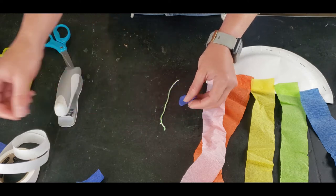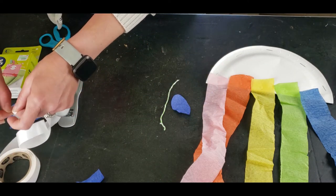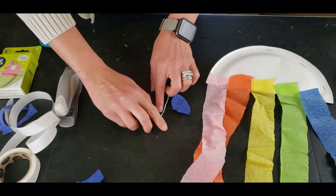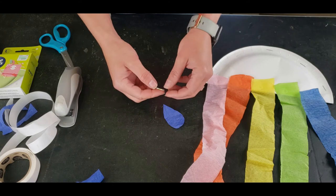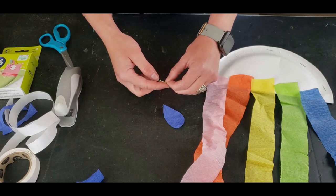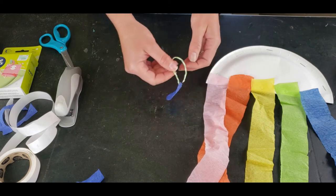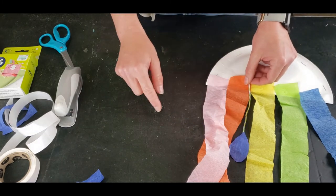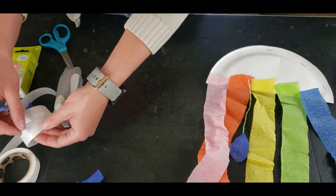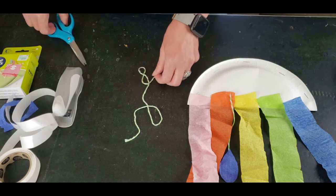And then I'm just going to use my glue dot again and adhere this together. So put my one piece of my string at the top of my drop, and then I'm going to add my drop onto my rainbow with another glue dot for the other side.